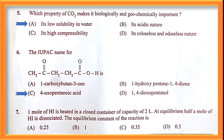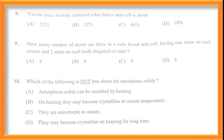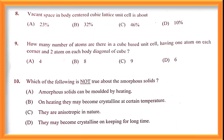Question number seven: one mole of HI is heated in a closed container of capacity 2 litres. At equilibrium, half a mole of HI is dissociated. The equilibrium constant of the reaction — if you go on solving, you will get 0.25 as the correct answer. A detailed solution will be uploaded in tomorrow's session, so stay tuned.